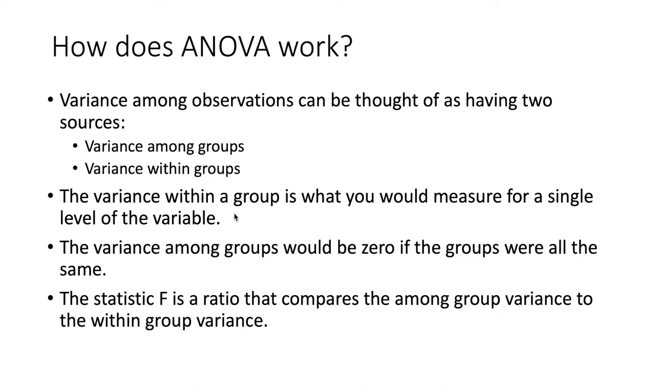The variance within a group is what you would measure for a single level. For example, if we took all the red values and measured its variance, then took all the blue values and measured its variance, and so on.